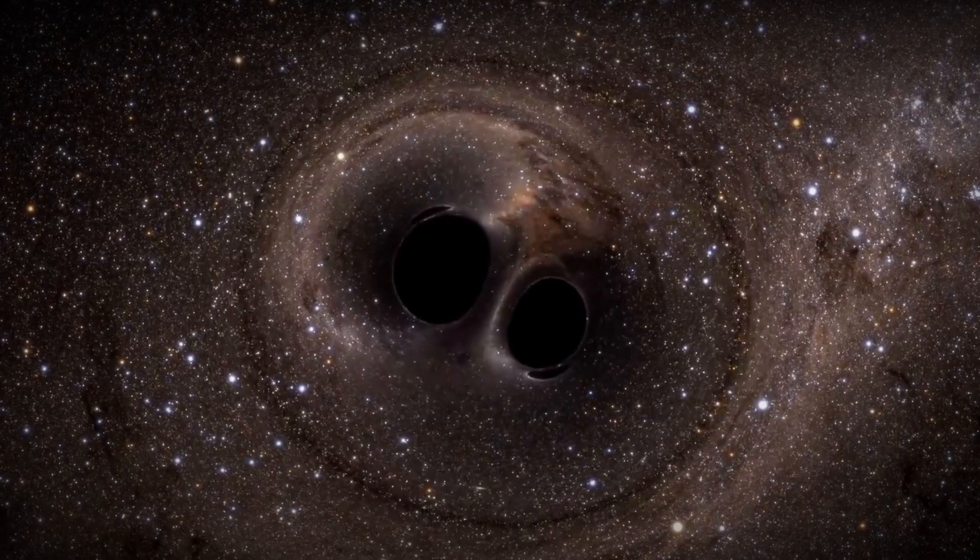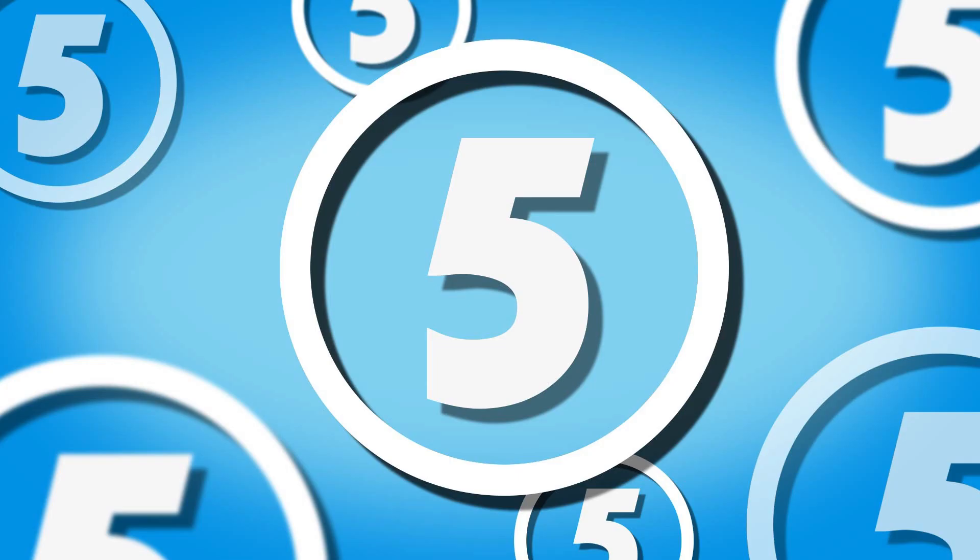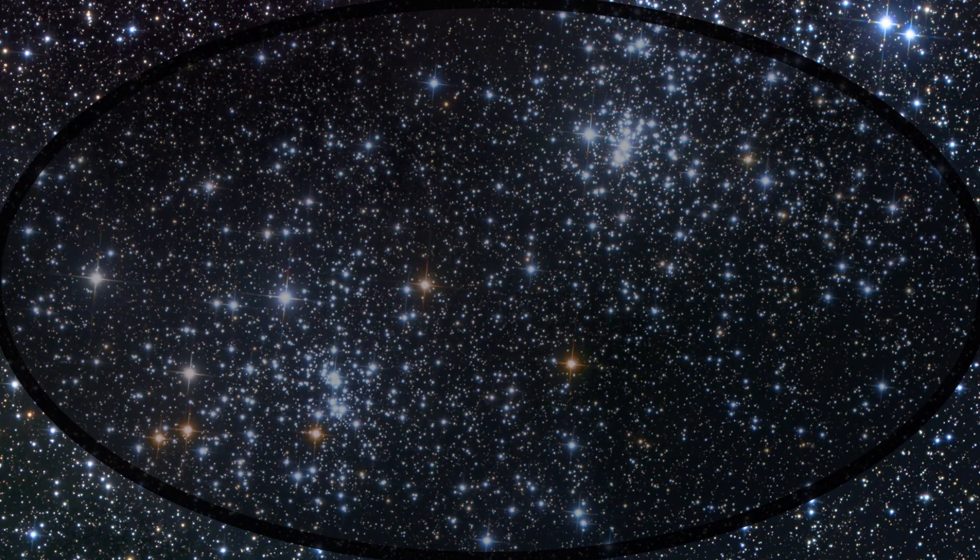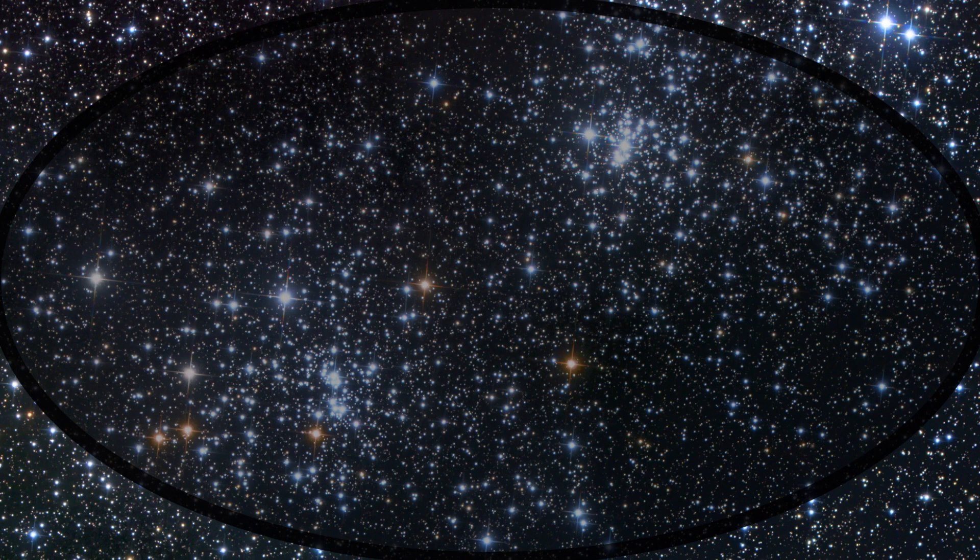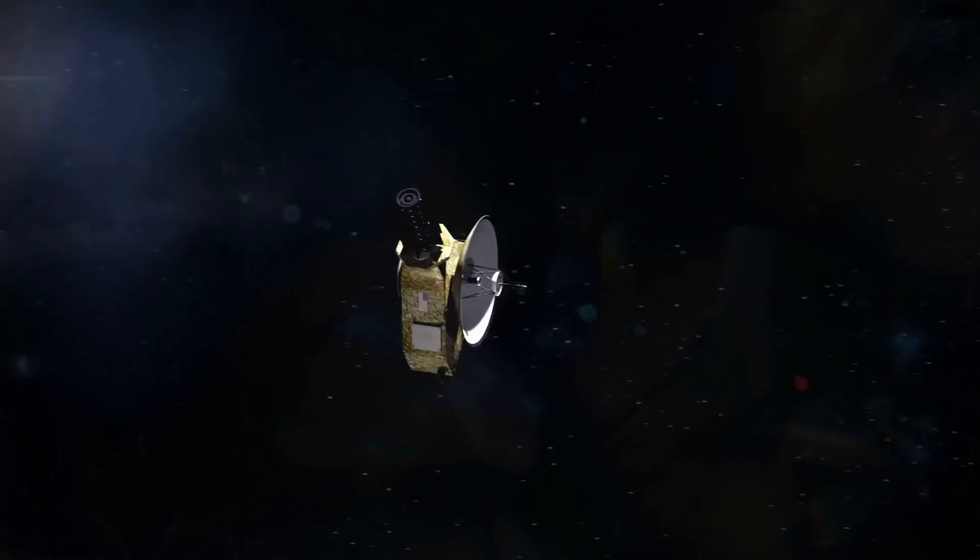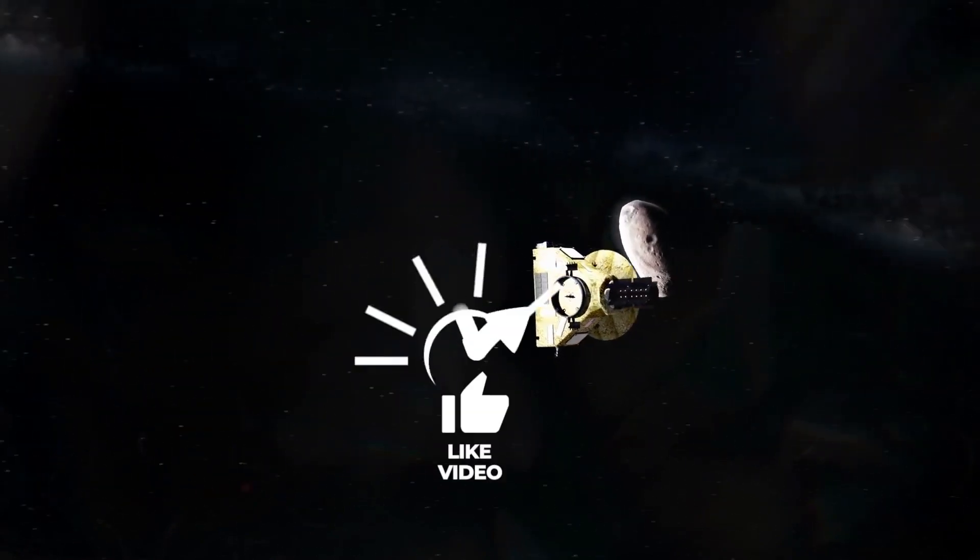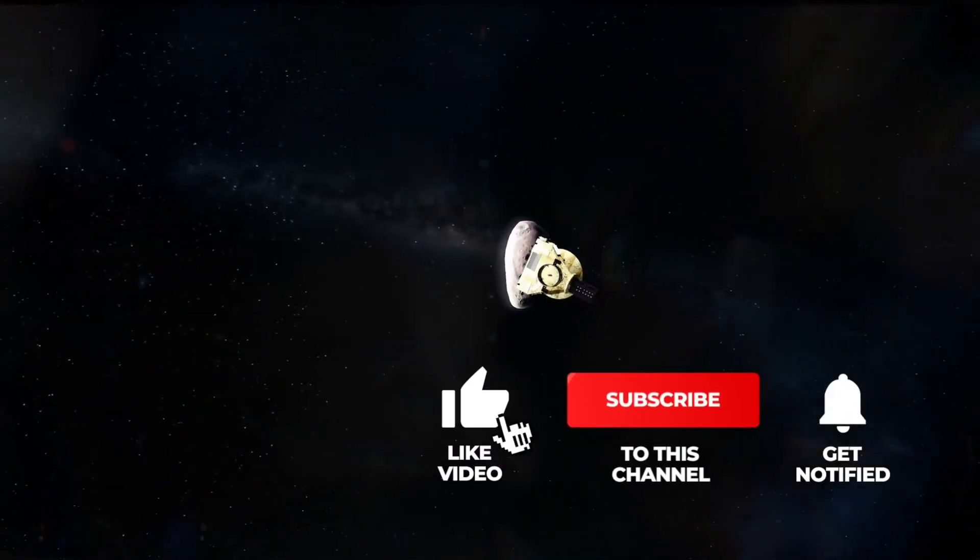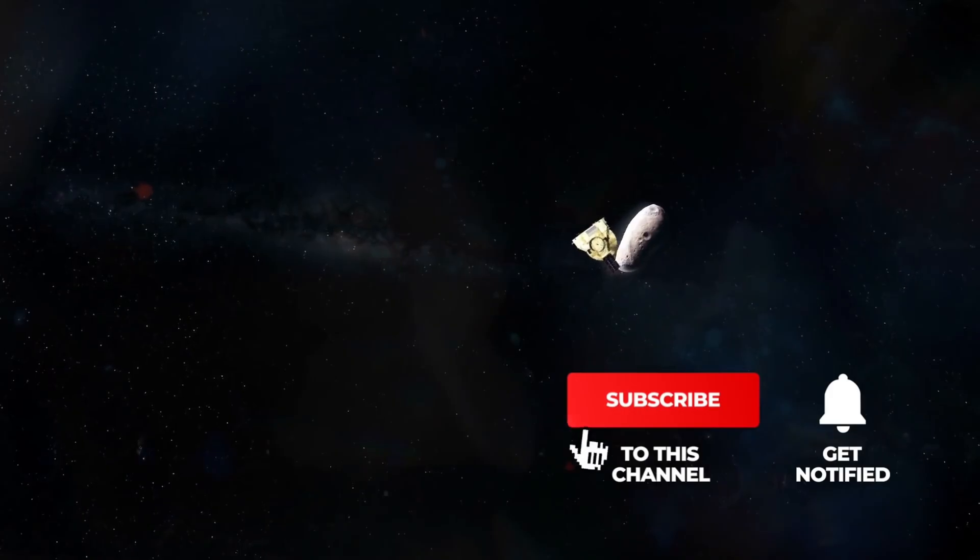The notion of outside the universe is very tricky because, first, the universe has to be defined more precisely. A common formulation that does more justice to the core of the matter is the term the observable universe, whereby the speed of light plays a major role. Since we can only see things when the light that they emit or reflect reaches us, we can never see further than the greatest distance that light can travel in the time that the universe has existed.